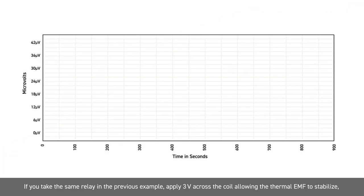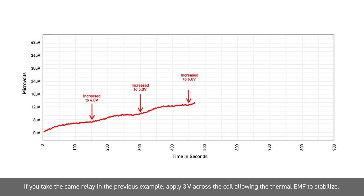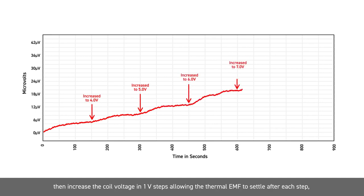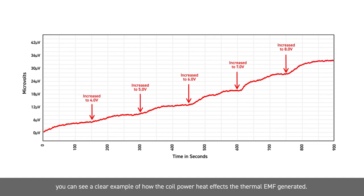If you take the same relay from the previous example, apply 3 volts across the coil allowing the thermal EMF to stabilise, then increase the coil voltage in 1 volt steps allowing the thermal EMF to settle after each step, you can see a clear example of how the coil power heat affects the thermal EMF generated.